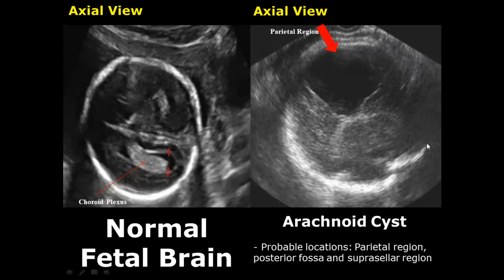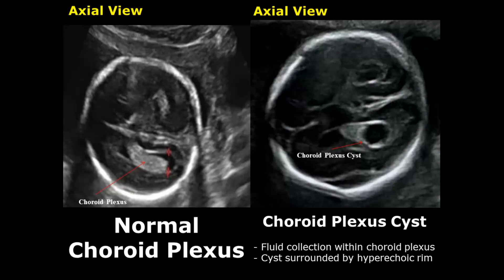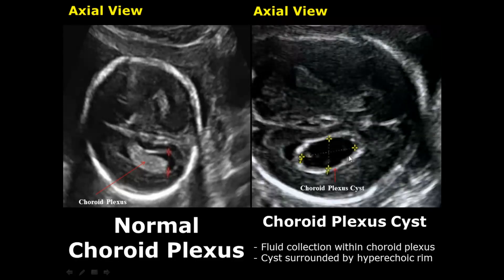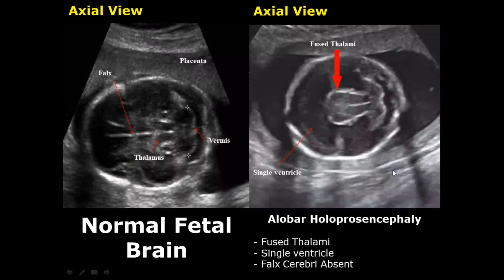A choroid plexus cyst is present inside the choroid plexus. Since the choroid plexus are hyperechoic structures, a cyst inside will have well-defined echogenic walls. Here is another image of a choroid plexus cyst showing its hyperechoic walls.